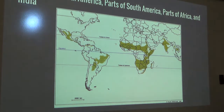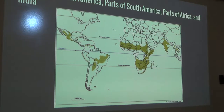The tropical dry forest is located in Central America, India, parts of South America, and parts of Africa. Although these places are in the same biome, the geography varies.